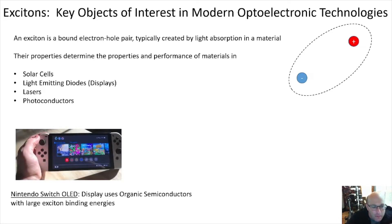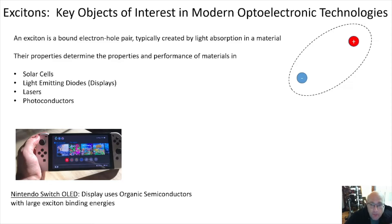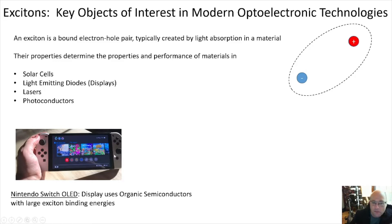Here's an example: the newest high-end model of a Nintendo Switch gaming console, which uses an organic light emitting diode screen for a really high performance display. The interesting point about the materials used to make the colors in that display is that they're organic semiconductors, and they have binding energies that hold the electron and hole together within an exciton that are very large. One of the topics in this course is how to categorize different types of excitons in different types of materials.